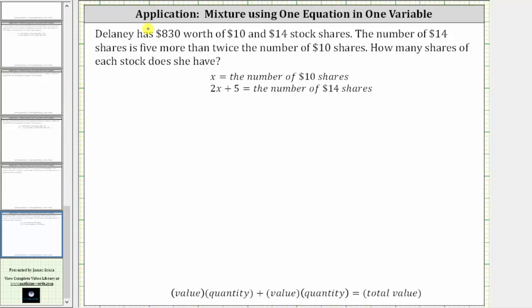We also know the total value is $830, so now we can write a value equation that we can then solve to answer the question. The value equation is going to be the value of the first stock times the number of shares of the first stock plus the value of the second stock times the number of shares of the second stock must equal the total value.